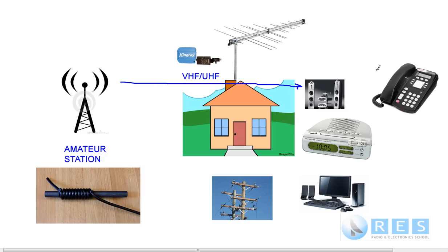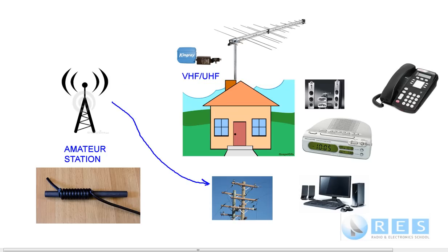These devices have leads — speakers have leads, the telephone has a lead, the clock radio has a lead, the computer has leads and speakers. Those leads can pick up radio frequency energy and conduct it into one of these devices, causing interference. That's radiated interference. The last type is conducted interference: you are connected to the power lines, and your neighbour is too. Radio frequency energy can enter the power line system and go into your neighbour's home. The household wiring acts like a big antenna and your amateur transmission can be conducted to one of these devices. That's conducted interference.